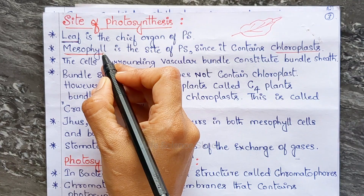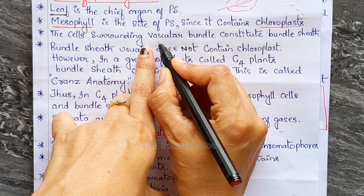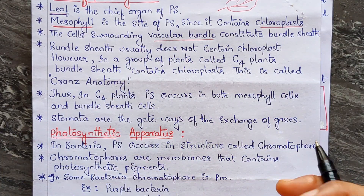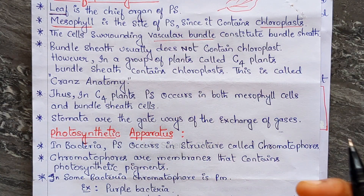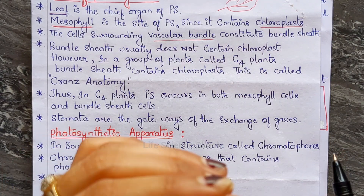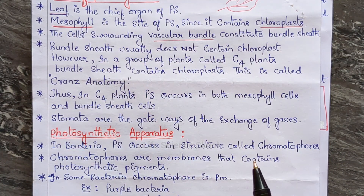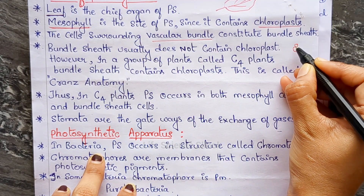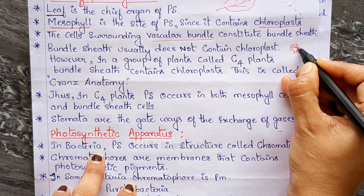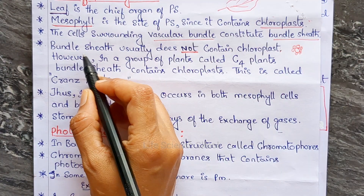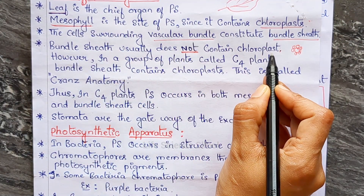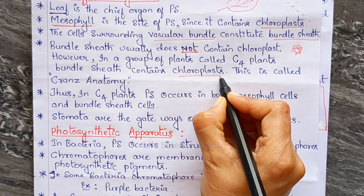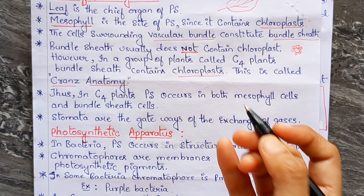The cells surrounding the vascular bundle constitute the bundle sheath. The vascular bundle is the conducting vessel of the plant, consisting of xylem and phloem. Bundle sheath usually doesn't contain chloroplasts; however, in a group of plants called C4 plants, bundle sheath contains chloroplasts. This is called Kranz anatomy.